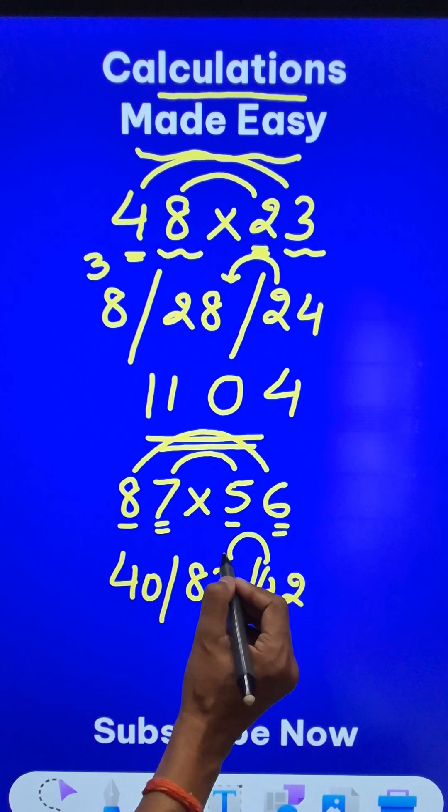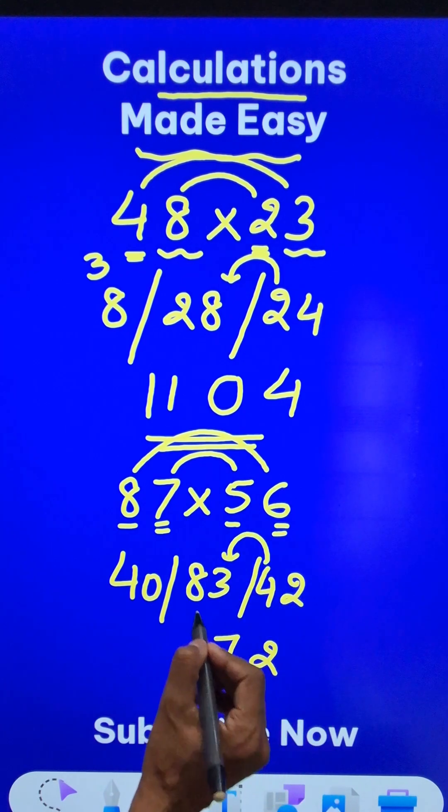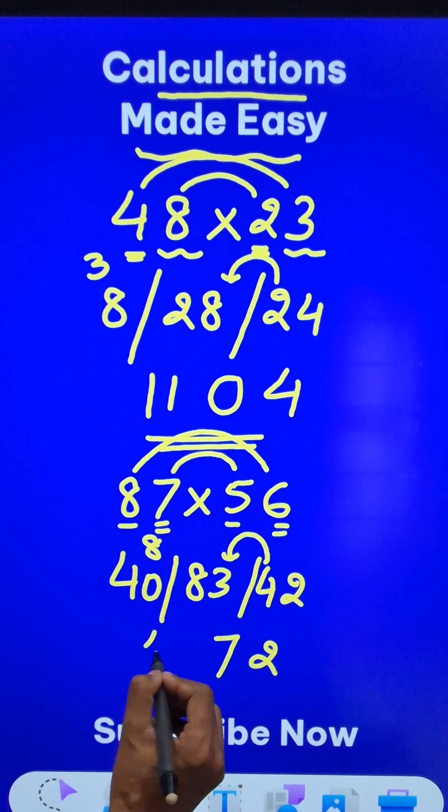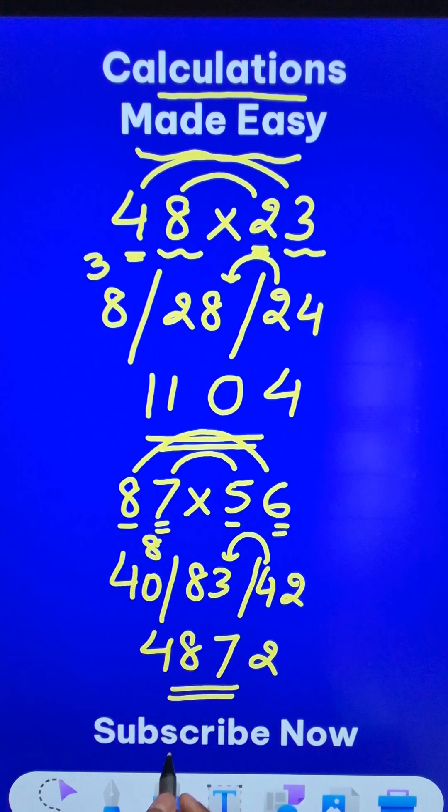Retain the 2, carry forward the 4, 87 means 7 and 8 carried. So this becomes 48 and you have the answer 4872.